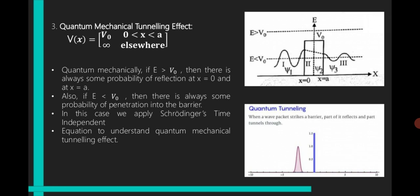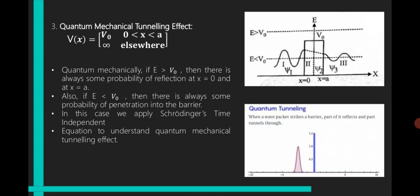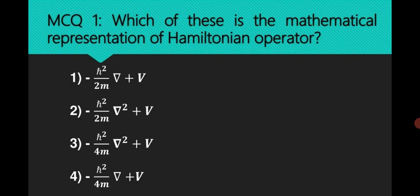Next, quantum mechanical tunneling. When we observe a particle and there is a barrier restricting its movement, classically the particle would be bounced back and not allowed through the wall. However, from a quantum mechanical perspective, there is a finite probability of the particle penetrating and passing through the barrier — this is the tunneling effect, representing the probability of finding the particle on the other side.